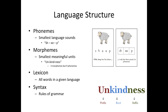A lexicon comprises a memory store that contains words and their meanings — it's essentially all the words we have in a given language, like a dictionary. Words are strung together in patterns that conform to the language rules of grammar. These rules of grammar are called syntax, and a key aspect of syntax is using the appropriate verb tense.